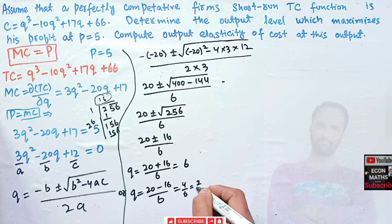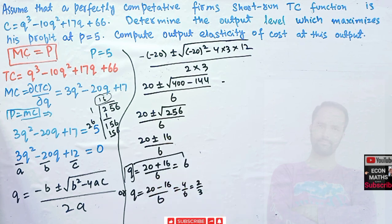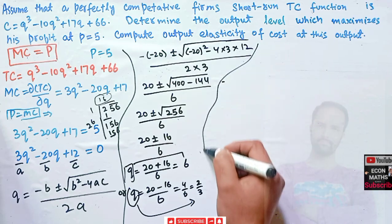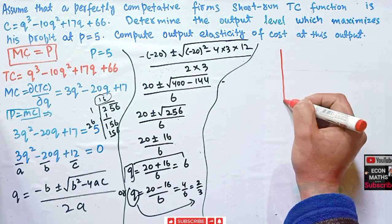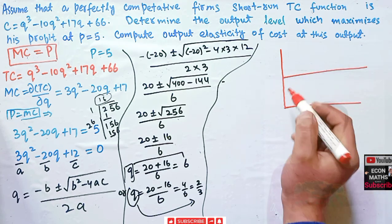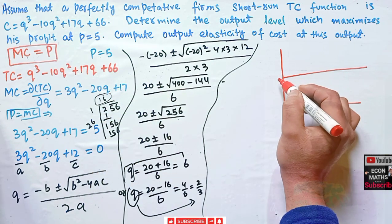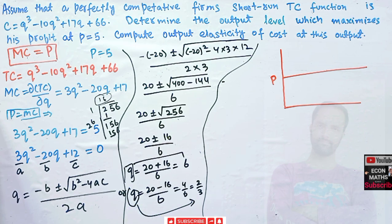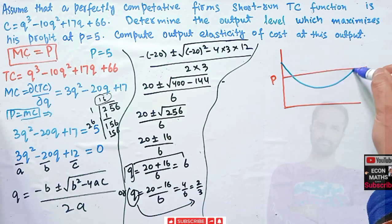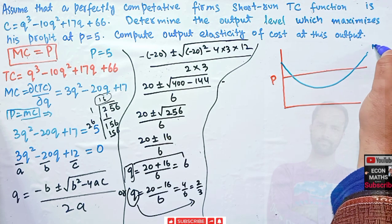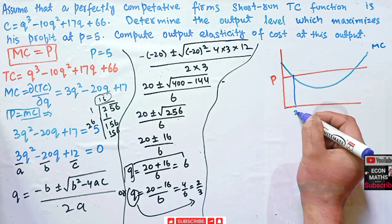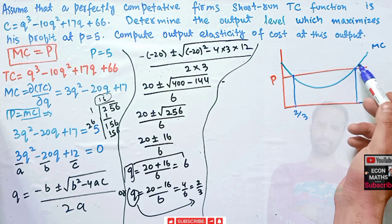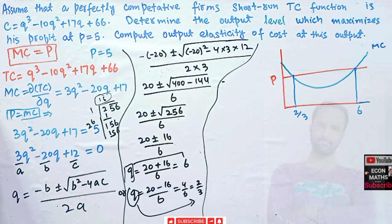This gives us Q = (20 + 16)/6 = 36/6 = 6, or Q = (20 - 16)/6 = 4/6 = 2/3. So we got two values: Q = 6 or Q = 2/3. Since we got two values, we need to find out the second order condition as well. Graphically, price = 5 intersects the marginal cost function at both Q = 2/3 and Q = 6.